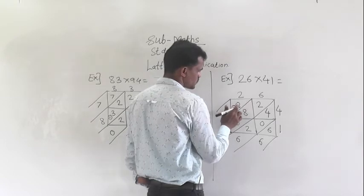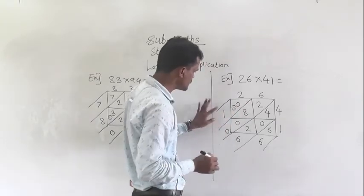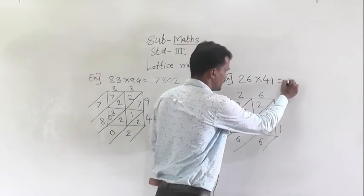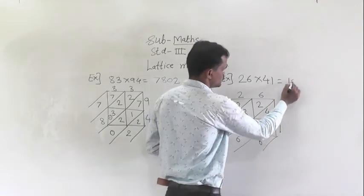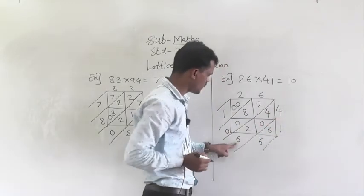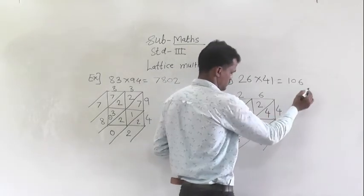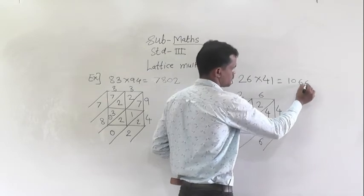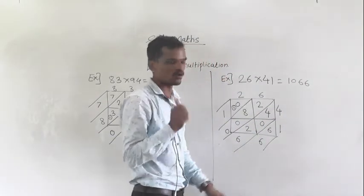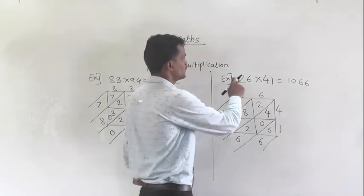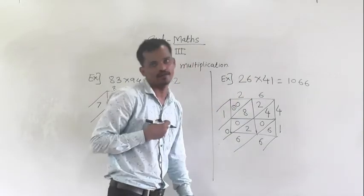Here 0 is there, 0 plus 1 carry is 1. So write the answer starting from this side: first write 1, then 0, then 6, then 6. So 1066 is the product of 26 and 41.